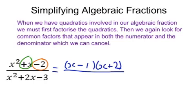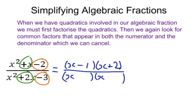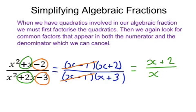Similarly, on the bottom, we write out two brackets with x at the front of both. We're looking for numbers which multiply to make minus 3 and add to make plus 2. That gives us minus 1 and plus 3. Now we have our factors, we can cancel out the common factor of x minus 1 on the top and on the bottom, to give us our final answer of x plus 2 over x plus 3.